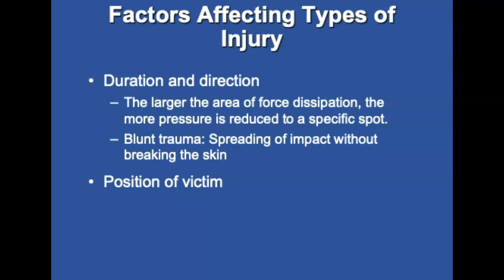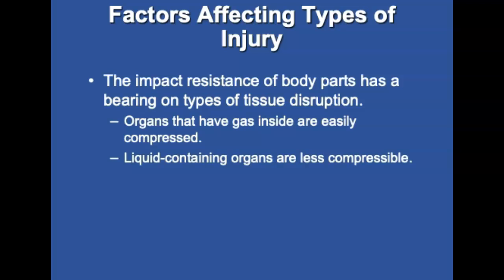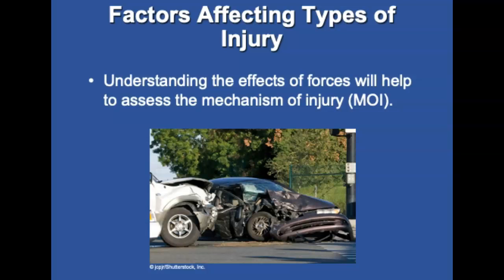The position of the trauma victim at the time of the event is another external factor. Seatbelt use has reduced lethal injuries by keeping victims in safer positions. The impact resistance of body parts also matters. Organs containing gas, such as lungs and the gastrointestinal tract, will shatter energy more than liquid or solid boundaries and are easily compressed. Liquid-containing organs like the vascular system, liver, spleen, and muscle are less compressible. Understanding the effects of forces helps assess mechanism of injury and predict likely injury types. Paramedics should have a high index of suspicion for undetected injuries.